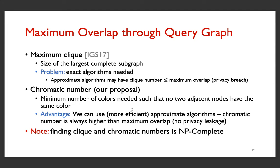Our proposal is, instead, to use the chromatic number, and the advantage here is that we can use approximate algorithms for that, because it's a minimization problem. And hence, any approximation would be higher than the maximum overlap, and no privacy leakage would result.